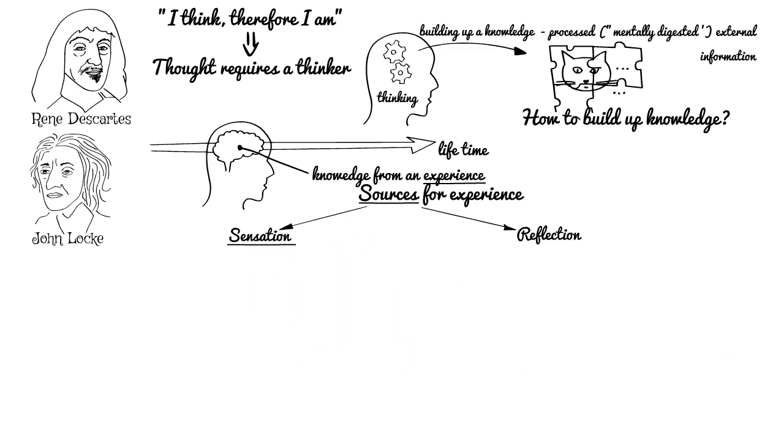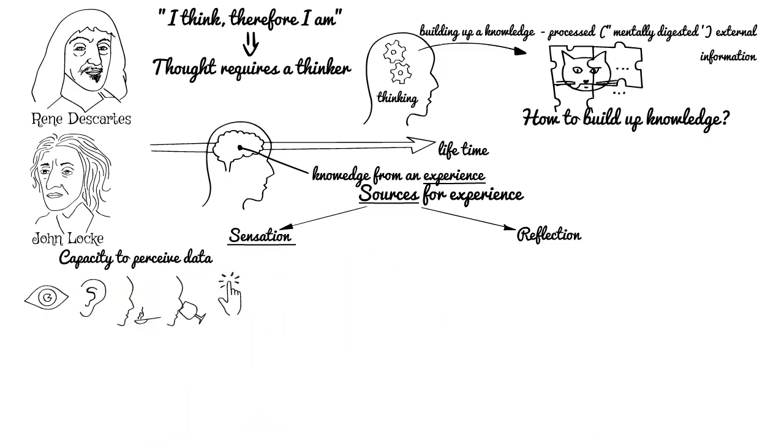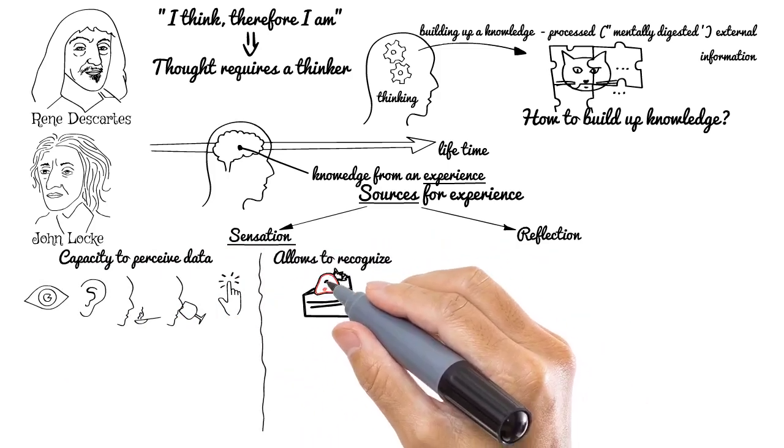Sensation comes in form of using human senses. Our physiological capacity to perceive data by seeing, hearing, tasting, smelling, or touching. Such source of experience allows us, for example, to see and recognize red objects or taste sweet things.